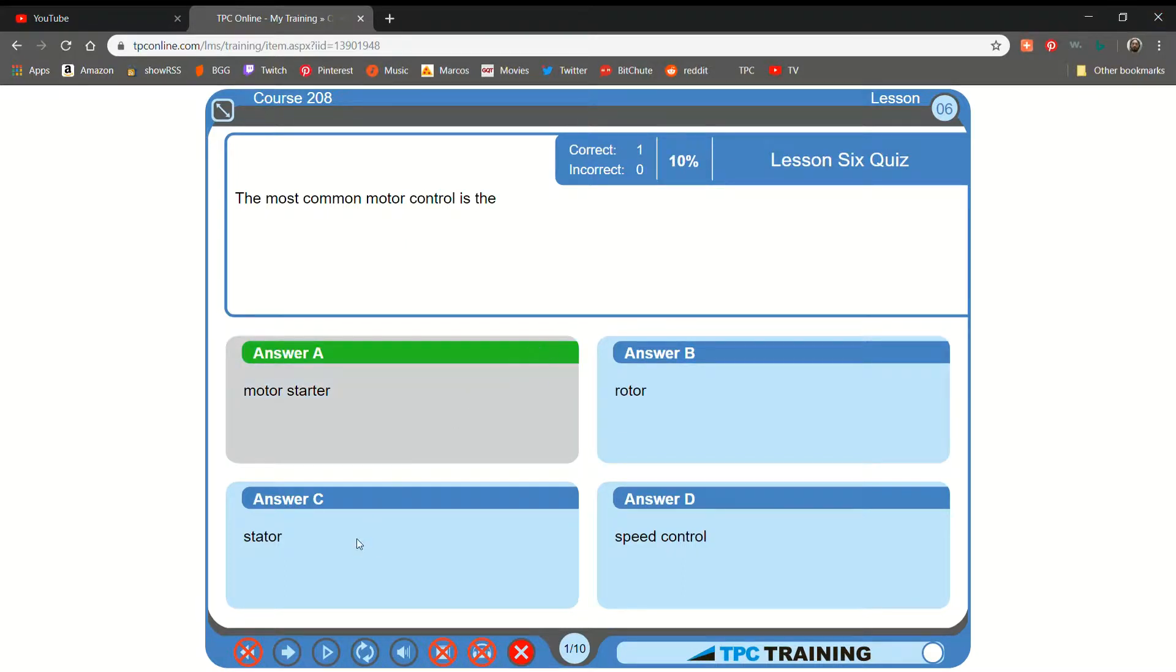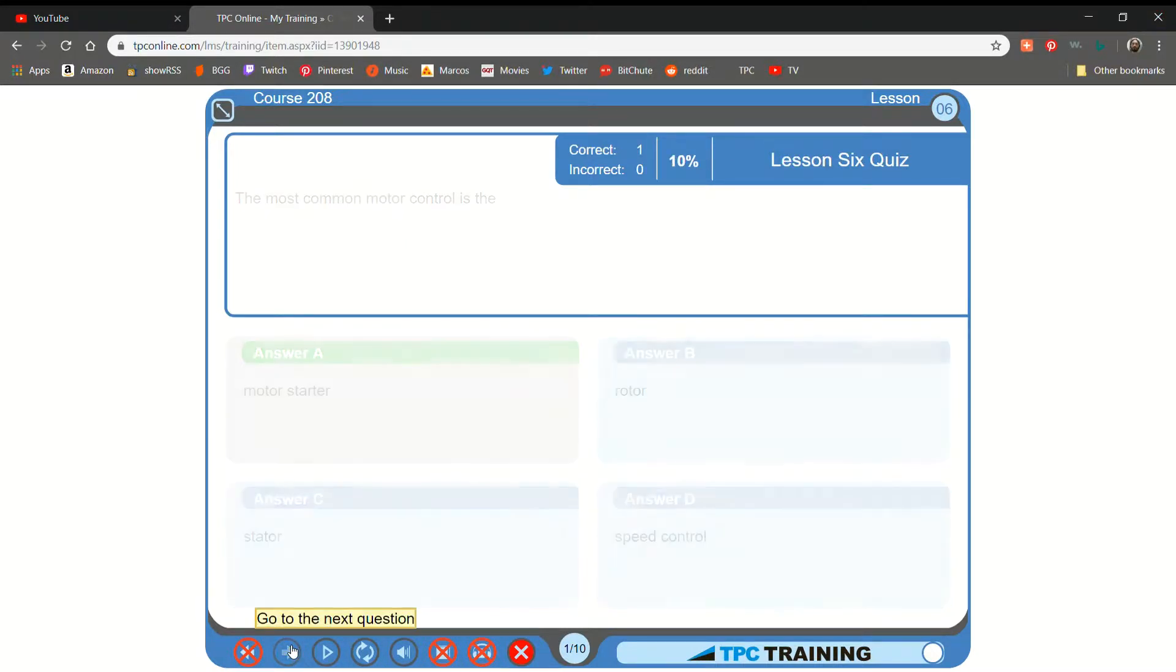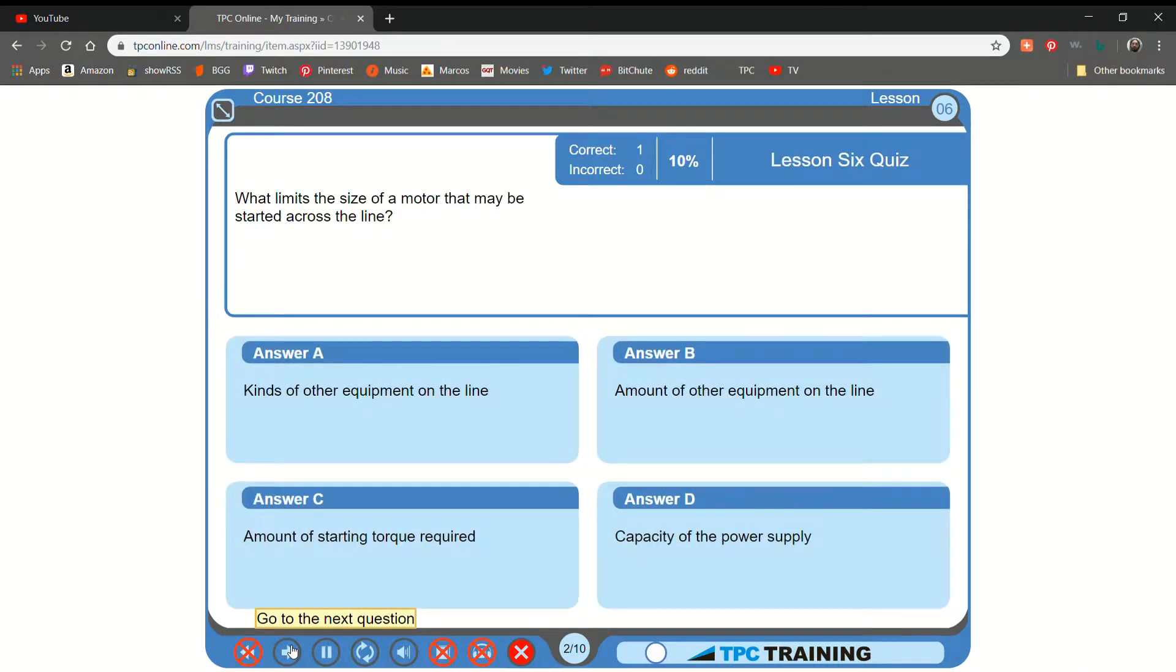What limits the size of a motor that may be started across the line? A. Kinds of other equipment on the line. B. Amount of other equipment on the line. C. Amount of starting torque required. D. Capacity of the power supply. That is correct.